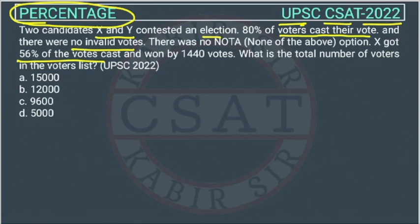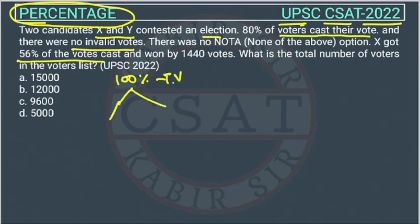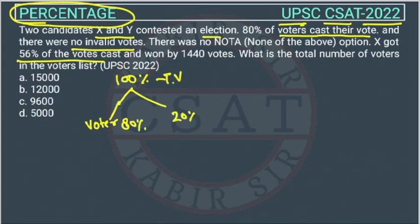Let's suppose there are 100% voters total. Out of these, 80% are voting and 20% did not vote. So 80% of the total people voted and 20% didn't vote.